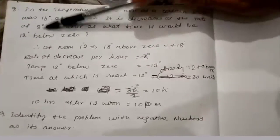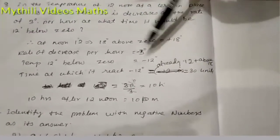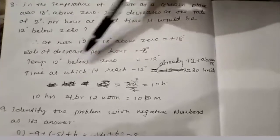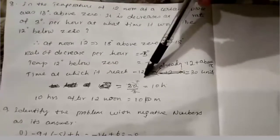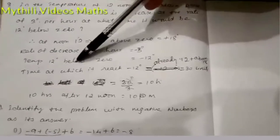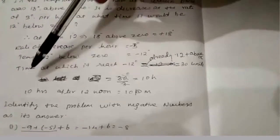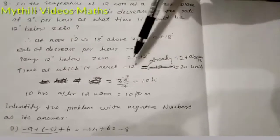Then the rate of decrease per hour - decreasing means it is minus symbol. Per hour, 3 degrees is given, so decreasing per hour equals -3 degrees. Then temperature 12 degrees below zero. Below means it is minus, so